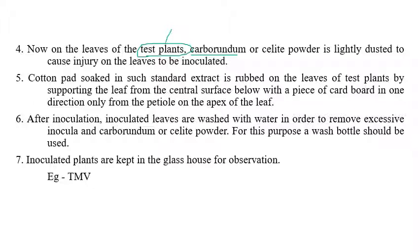A cotton pad is soaked in the sap extract obtained from the infected sources, and then rubbed onto the healthy (test) plant leaves. After inoculation onto the healthy plants, the inoculated plants are kept in laboratory or glasshouse conditions for observation. The sap can also be stored at minus four degrees centigrade for further use. Tobacco mosaic virus or cucumber mosaic virus is commonly used for this experiment.